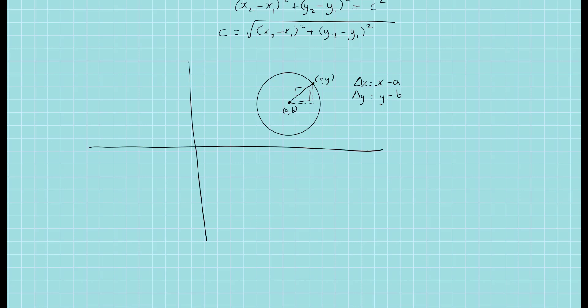So that accounts for this distance and this distance. And these distances satisfy the Pythagoras theorem, which is delta y squared plus delta x squared equals R squared. So R equals the square root of delta y squared plus delta x squared, which is the square root of y minus B squared plus x minus A squared.